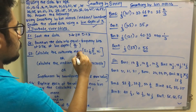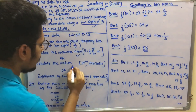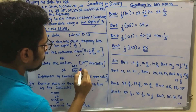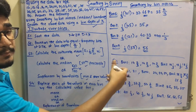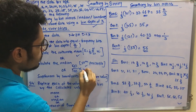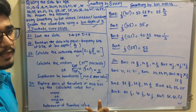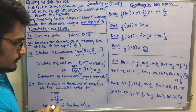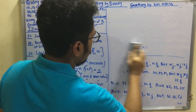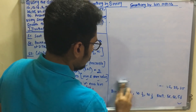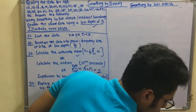Next is smoothing by bin medians. The 50th percentile is calculated as 50 divided by 100 multiplied by the number of items in each bin. With three items per bin, 3 plus 1 divided by 2 gives the second term, so the middle value is always the median. Steps 1, 2, and 3 remain the same; we go directly to step four.